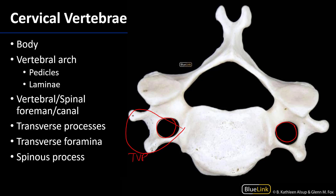The transverse processes of the cervical vertebrae can be quite variable — these ones are bifid, giving an anterior and a posterior tubercle for each transverse process. Looking at a superior view of a cervical vertebra, we can identify directionality: the body of the vertebra is located anteriorly, while the spinous process is located posteriorly.